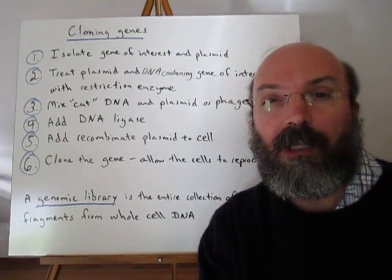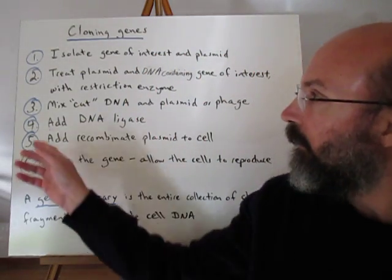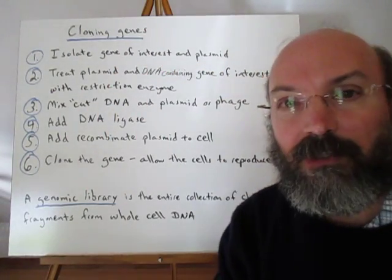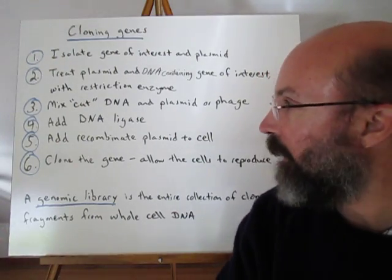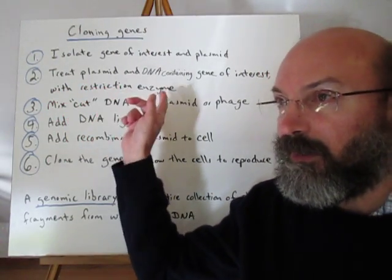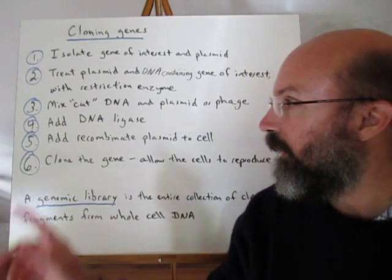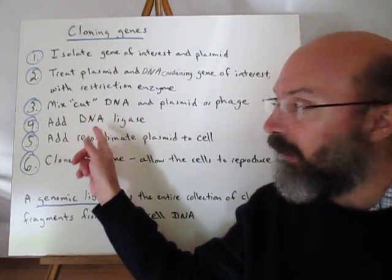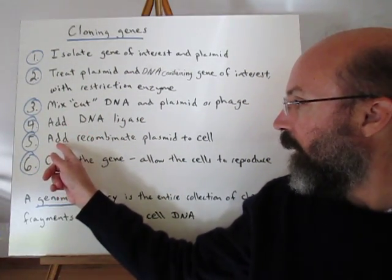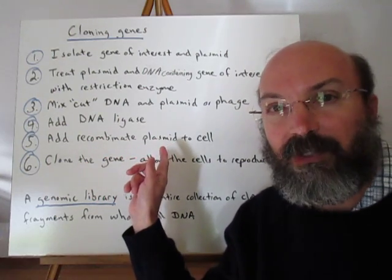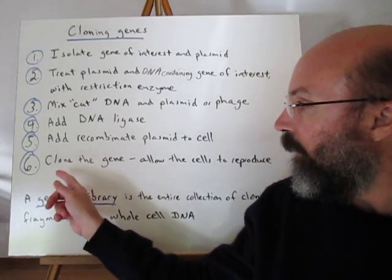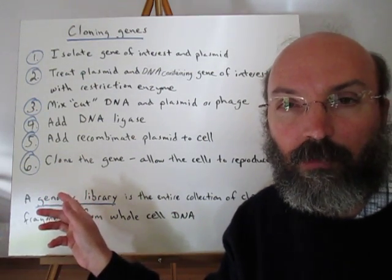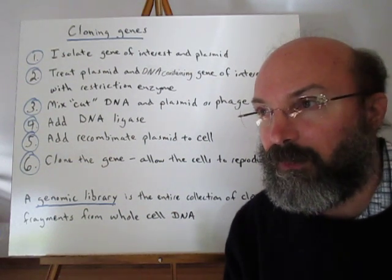The steps in cloning a gene are: first you have to isolate the gene of interest and find a plasmid to use as your vector. Then you treat the plasmid and the DNA containing the gene of interest with your restriction enzyme, mix them together so that they become cut, add the DNA ligase, and then add the recombinant plasmid to the cell that it needs to go into. Then allow the cell to replicate itself, and that's going to produce the clone — that gene that has been placed in there.